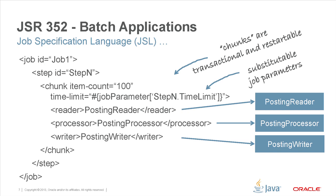What that means is, as the job step runs and reads through items, in this job definition you can see that every hundred items we want to checkpoint our work — which means commit a transaction, start a new transaction, and continue. That sets us up for restartability. So if you have a four-hour job that's three hours in and something wrong is found in the input and you need to stop the job, you don't want to start back at minute one. You want to start back where you left off at hour three. That's the idea behind restartability.